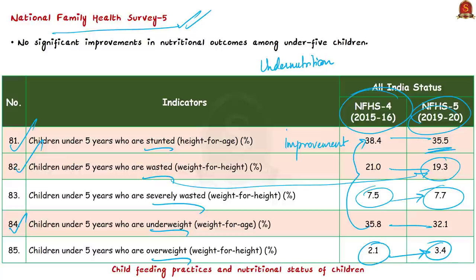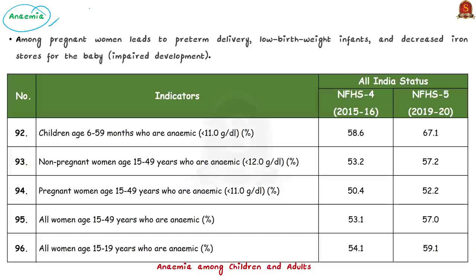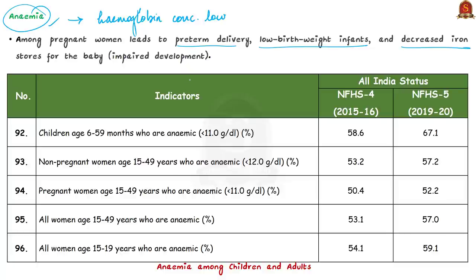The malnutrition component is linked to other important components. The first is anemia, including childhood anemia. Anemia is a condition in which the number of red blood cells or the hemoglobin concentration is lower than normal. Anemia can be seen in pregnant women and in children. Among pregnant women, anemia is associated with adverse reproductive outcomes including preterm delivery, low birth weight of infants, and decreased iron stores for the baby, which leads to impaired development of the child.